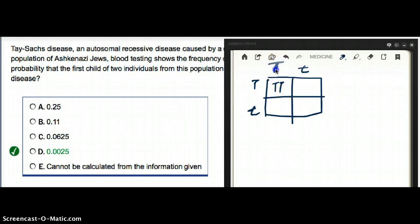The big T means that it's normal. The little t means they have the disease. The reason the little t means they have the disease is because this is autosomal recessive - they need the recessive gene.